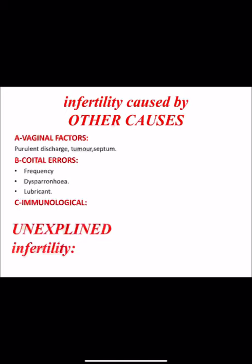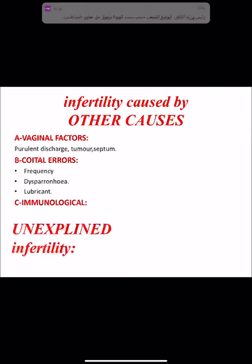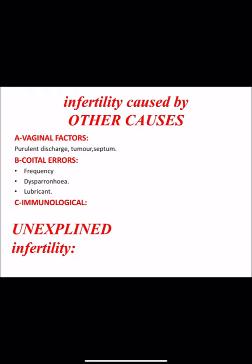Other causes of infertility include vaginal factor (purulent discharge, humor, or septum), coital errors such as inappropriate frequency or timing of intercourse relative to ovulation, dyspareunia, excessive use of lubricant, congenital penile anomalies such as hypospadias or epispadias, or retrograde ejaculation. Immunological causes involve antibodies in the cervix or blood against sperm. If no cause is found, it is called unexplained infertility.